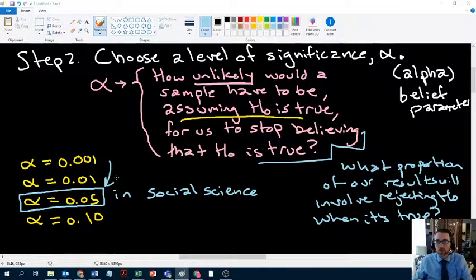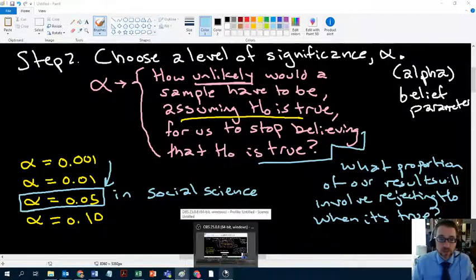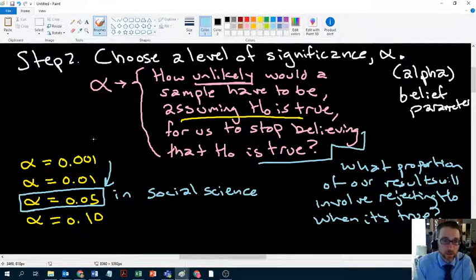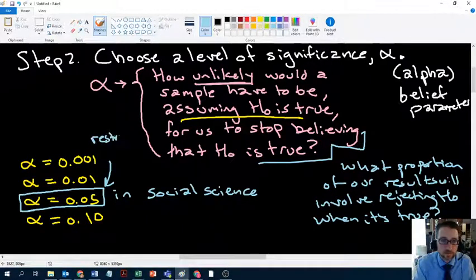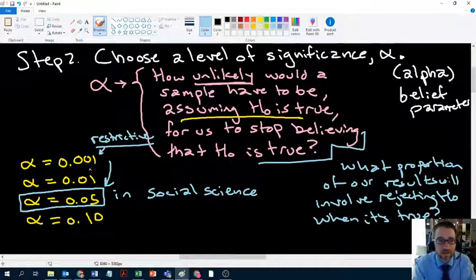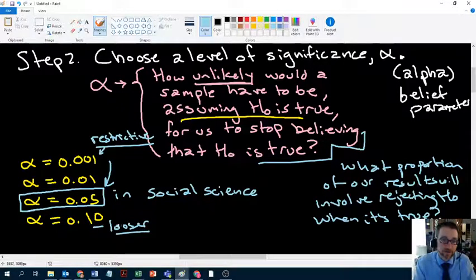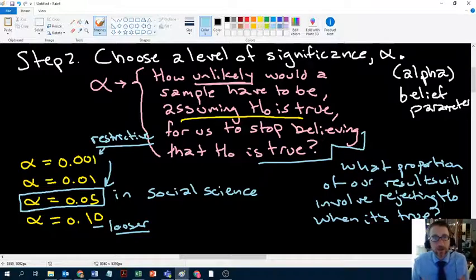And so one out of every 20 of our results will involve rejecting the null, even though the null is true. The problem is we don't know which one it is. One out of 20, but we don't know which one that is. But so when you read the newspaper or you're following along with social science research, you should know one out of every 20 results is wrong. And we just don't know, we just have to make that trade-off. And there is a trade-off. If we're more restrictive, which is here, then we have stubborn nulls. We've got a null that's hard to get rid of, even if it's wrong.